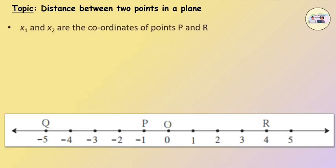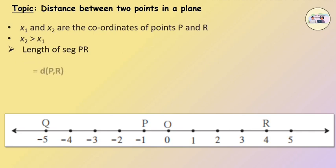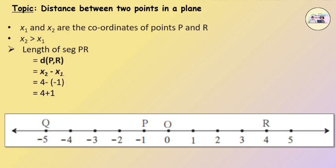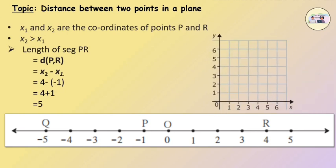If x1 and x2 are the coordinate points of P and R, and x2 is greater than x1, then the length of segment PR is equal to the distance of PR, which is equal to x2 minus x1. Observe the given number line. Here, segment PR equals the distance of PR, which equals 4 minus negative 1, which gives us 5.